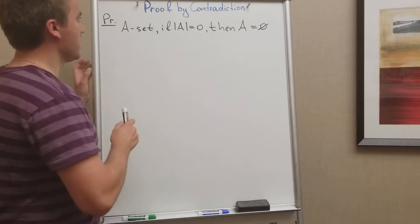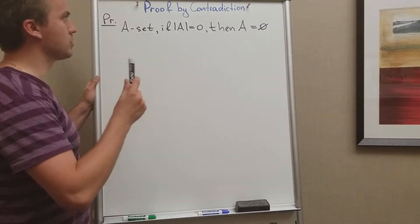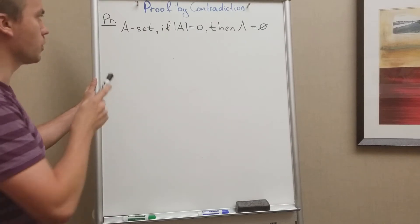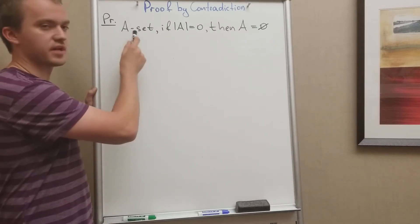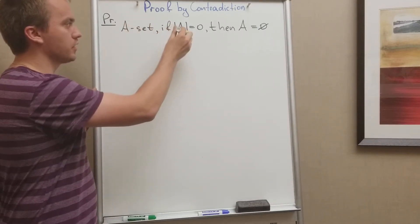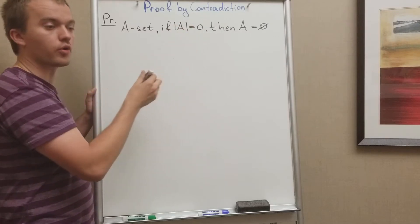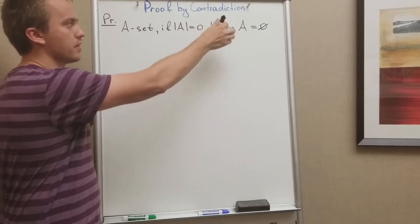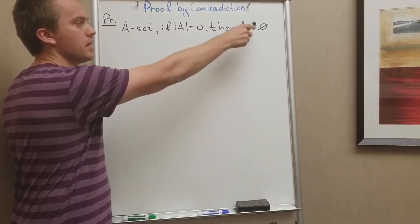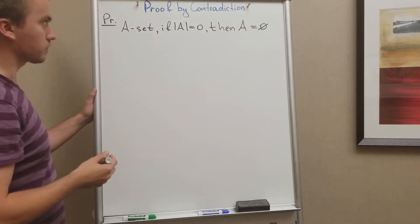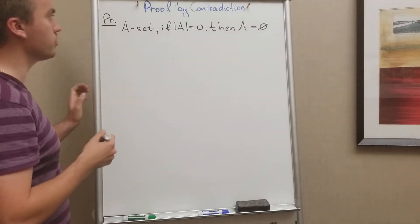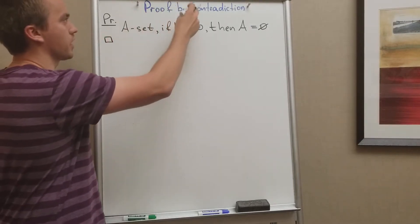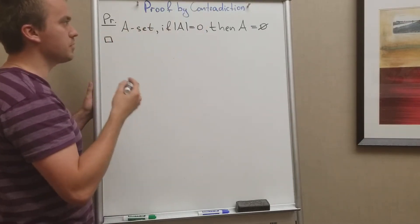Hello guys, in this video I want to discuss proof by contradiction. What I want to show is: given a set A where the cardinality of A equals zero — in other words, the number of elements is zero — I want to show that A is an empty set. I'm going to show this using proof by contradiction.